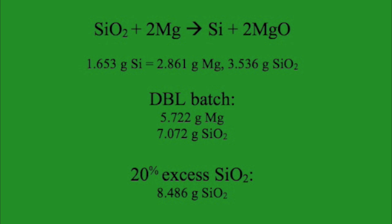I decided to do a double batch because I was expecting low yields. This brings the mass up to 5.722 grams of magnesium and 7.072 grams of silicon dioxide.